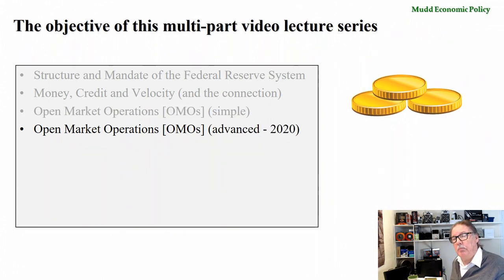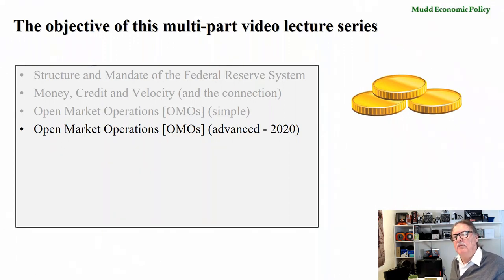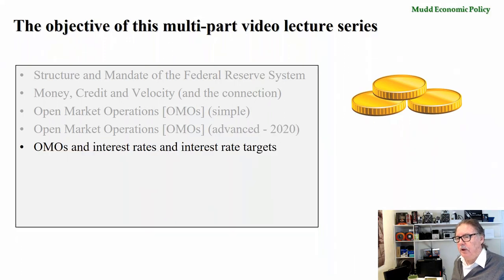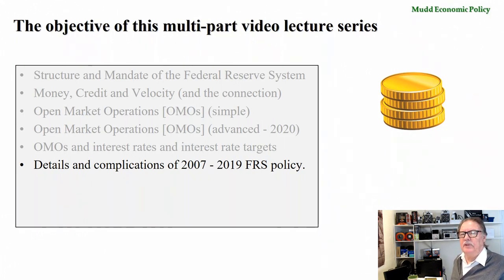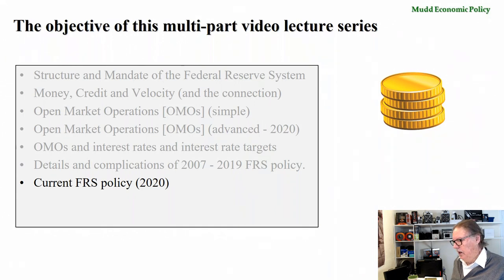An equally important component for understanding topical events in the pandemic of 2020 will be a more advanced treatment of open market operations and how they're being used in 2020. That's followed by a discussion of the impact of open market operations upon interest rates and interest rate targets. Then we'll look at the details and complications of Federal Reserve policy exercised between 2007 and 2019, because that's an evolving story that makes it difficult to understand the current story. Finally, we get around to talking about current Federal Reserve policy being used right now in the spring of 2020.